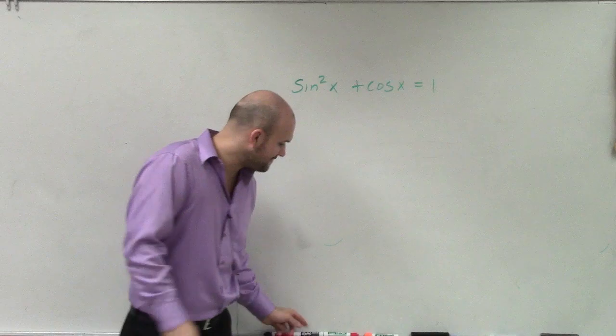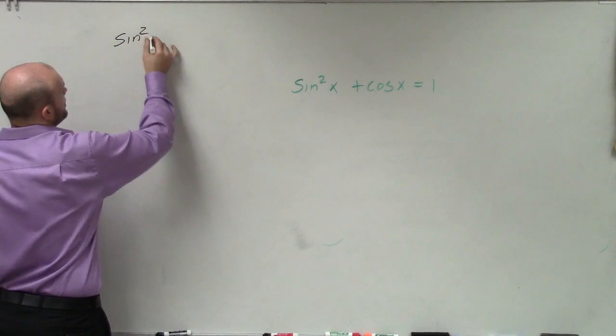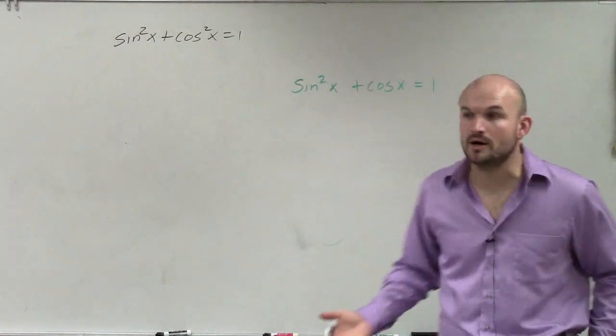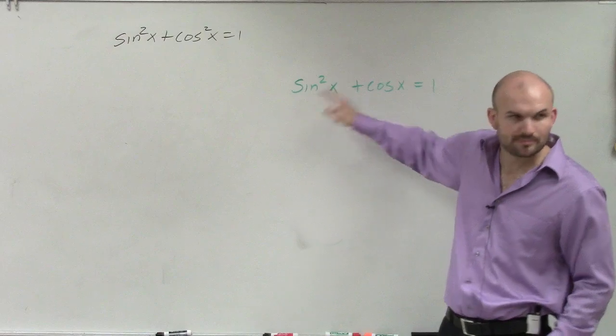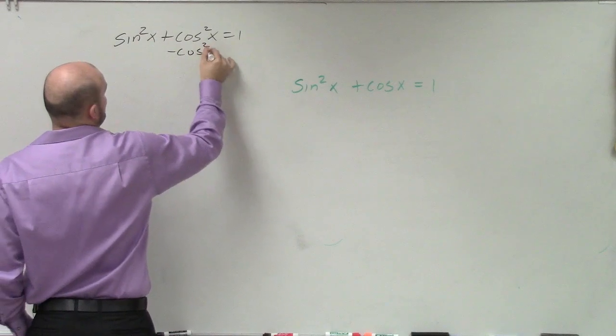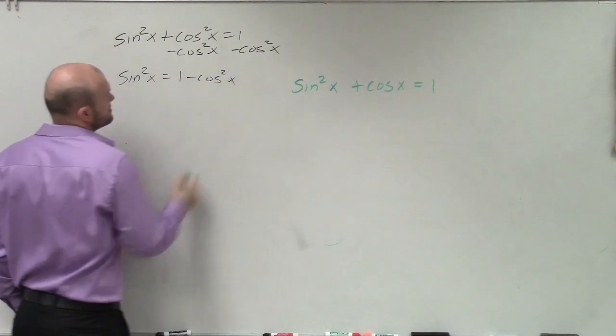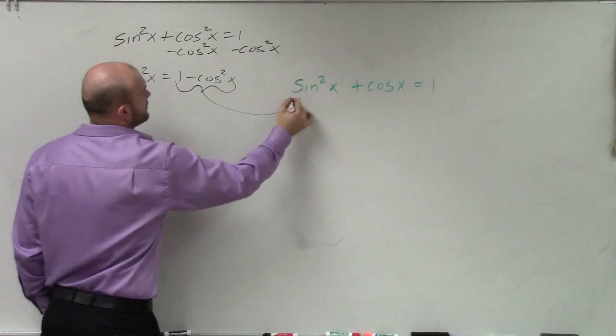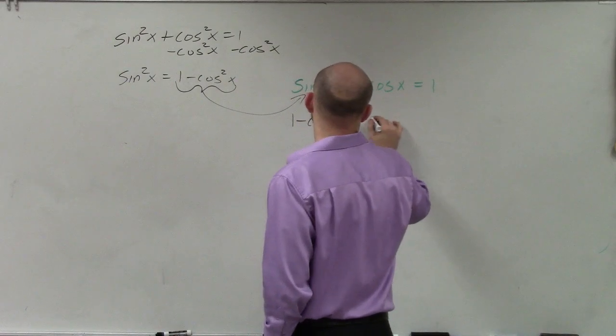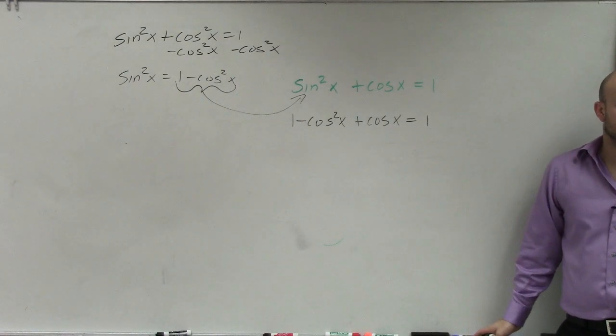So one thing I do notice, though, is I have a squared term. And whenever I have a squared term, I always want to think of applying my trig Pythagorean identities. So sine squared plus cosine squared equals one. So if I want to replace sine, try to replace them in terms of their same trig function. Therefore, I can rewrite sine squared as cosine squared of x. So therefore, I can write sine squared of x equals one minus cosine squared of x. So now, I'm going to plug this in for sine.